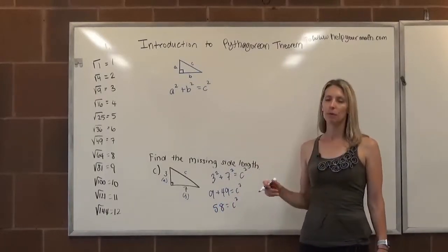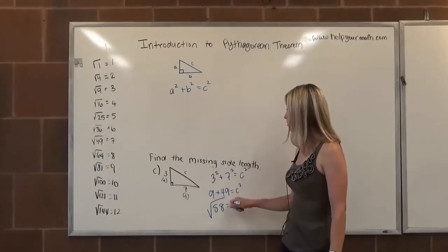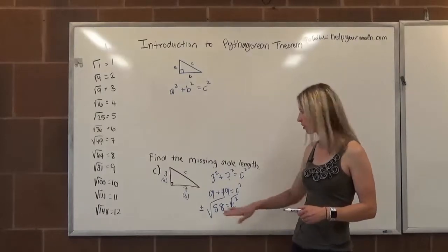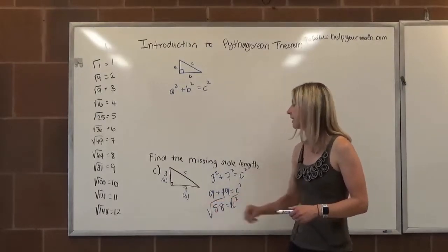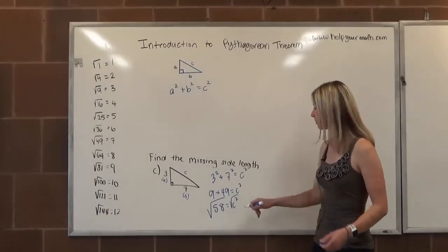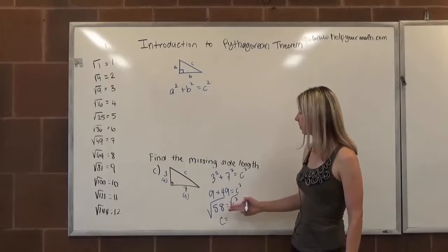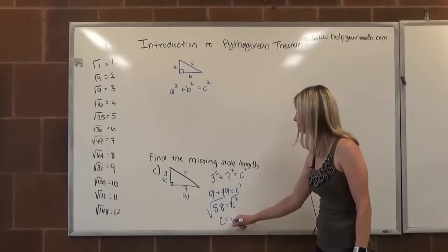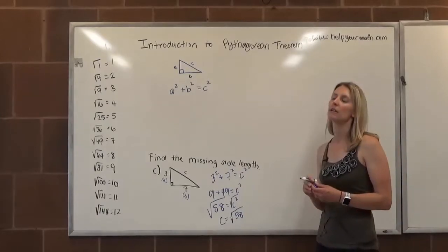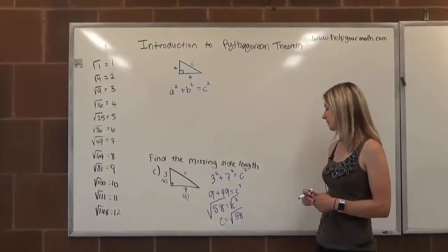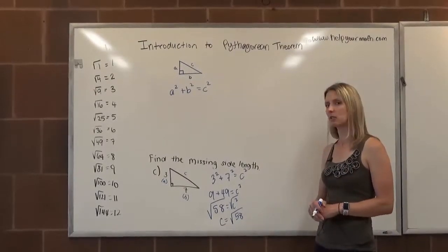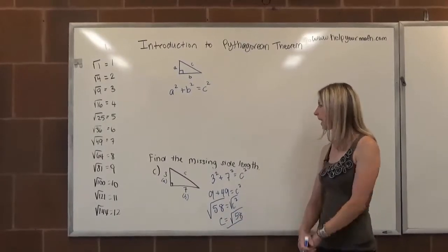58 equals c squared. To get c by itself, we will take the square root. As previously mentioned, generally when we take a square root, we should put a plus or minus here. But because we're talking about the side lengths of a triangle, we would never include a negative because side lengths have to be positive. So we can just disregard that and just say it's the square root of 58. So I'm going to use the commutative property and equality to turn it around and say c is equal to the square root of 58. From here, we want to verify that that is completely simplified. 58 is 29 times 2. They're both primes, so the only perfect square factor that 58 has is 1. This would be the simplified hypotenuse length.